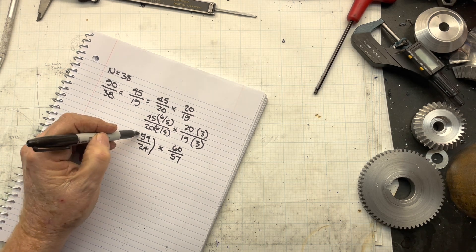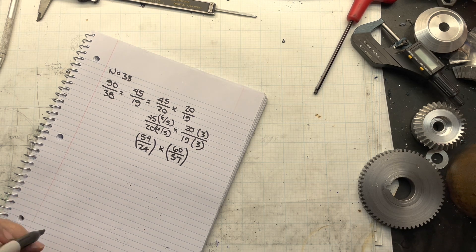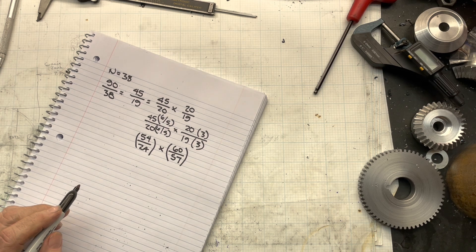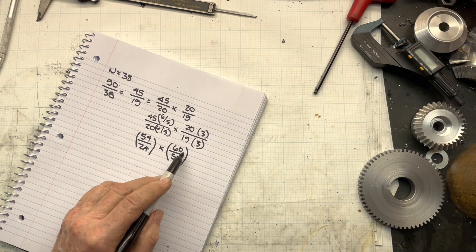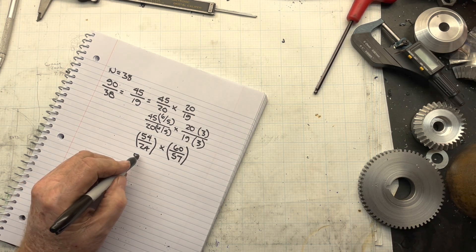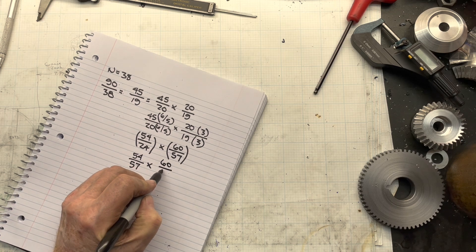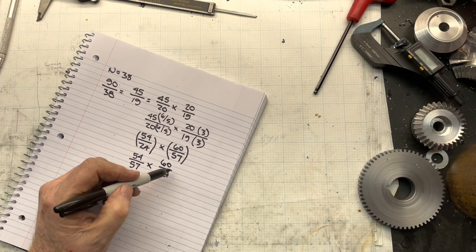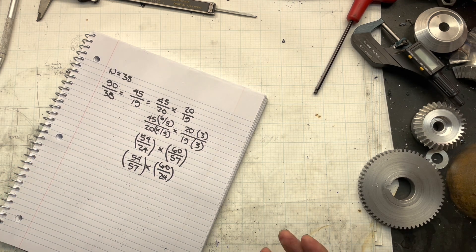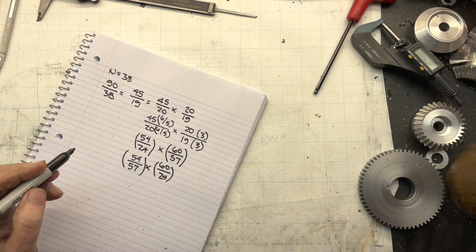And what I end up with is 54 over 24 times 60 over 57. And those are both very practical gear ratio pairs. Now, if there's something about this that doesn't work from a gear ratio design standpoint, you can interchange the numerators or the denominators if you needed to. And you could do something like 54 over 57 times 60 over 24. I'm not sure I'd argue that that makes sense, because you've got a reduction and a speed increase paired together. But just as an example for what you can do. So there's a lot of ways to make this work.